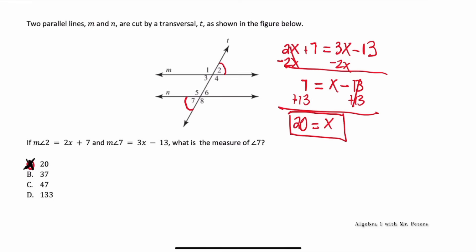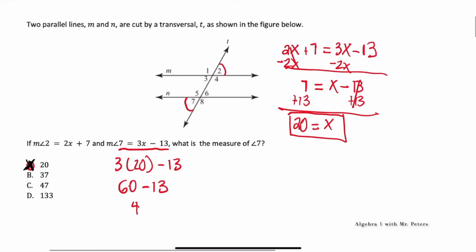So what we need to do is plug it back into angle 7. So 3 times X, which is 20, minus 13 — so we have 60 minus 13. As a result, this is going to be our final answer, which will be 47. So we know that the angle measure for angle 7 is going to be 47 degrees. And angle 2, because they're the same, will also be 47 degrees. We can use either of these equations to figure out the angle measure.